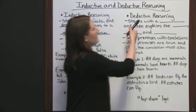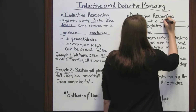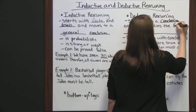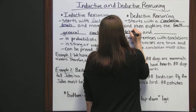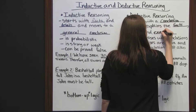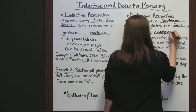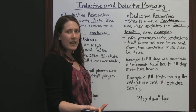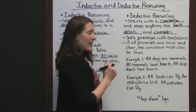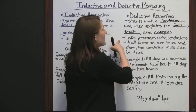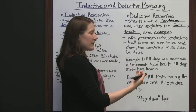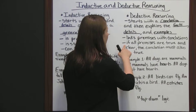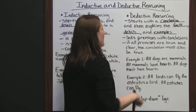Next, let's talk about deductive reasoning. Deductive reasoning starts with a conclusion and then explains the facts, details, and examples that support it. You start with one basic conclusion, one basic statement, and then give facts and details that can support it or are examples of that statement. This one links premises with conclusions — you come up with a certain premise and it's linked to your conclusion that you started with. If all premises are true and clear, then the conclusion must also be true.